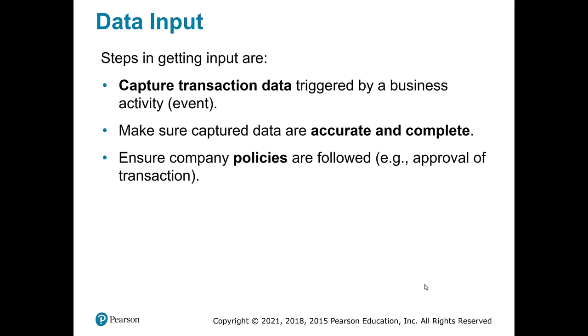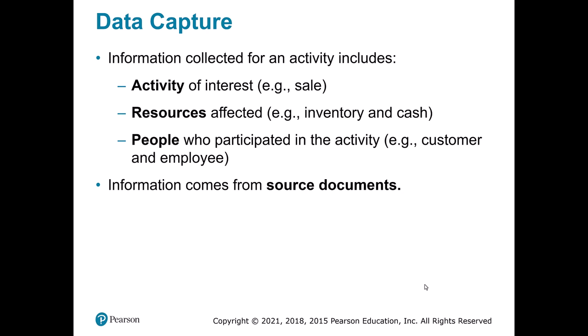Now that we know the overall process, let's talk about data input — how we capture that information. Data comes in different formats: email, database records. We want to capture it accurately and completely, and make sure we're following policies. For example, with milk spoilage, how do we know a clerk isn't just taking a jug home every day and claiming it was spoiled? We need controls to ensure data is input correctly. We also think about what kind of data to collect: what kind of activity is it, who does it involve, and who was engaged — like recording that Tim entered the spoilage of a 2% milk.